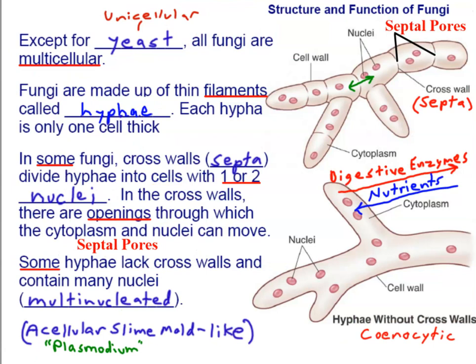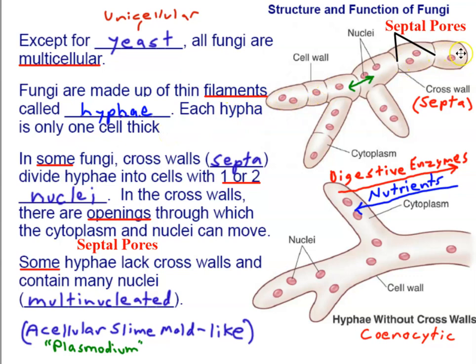Getting deeper into general structure and function: yeasts are the unicellular fungi, but multicellular fungi are filamentous organisms — their cells are in chains forming filaments, long chains of cells. The name of these filaments in fungi is hyphae (plural; hypha is singular). Each hypha is only one cell thick, as we're seeing in the diagram here.